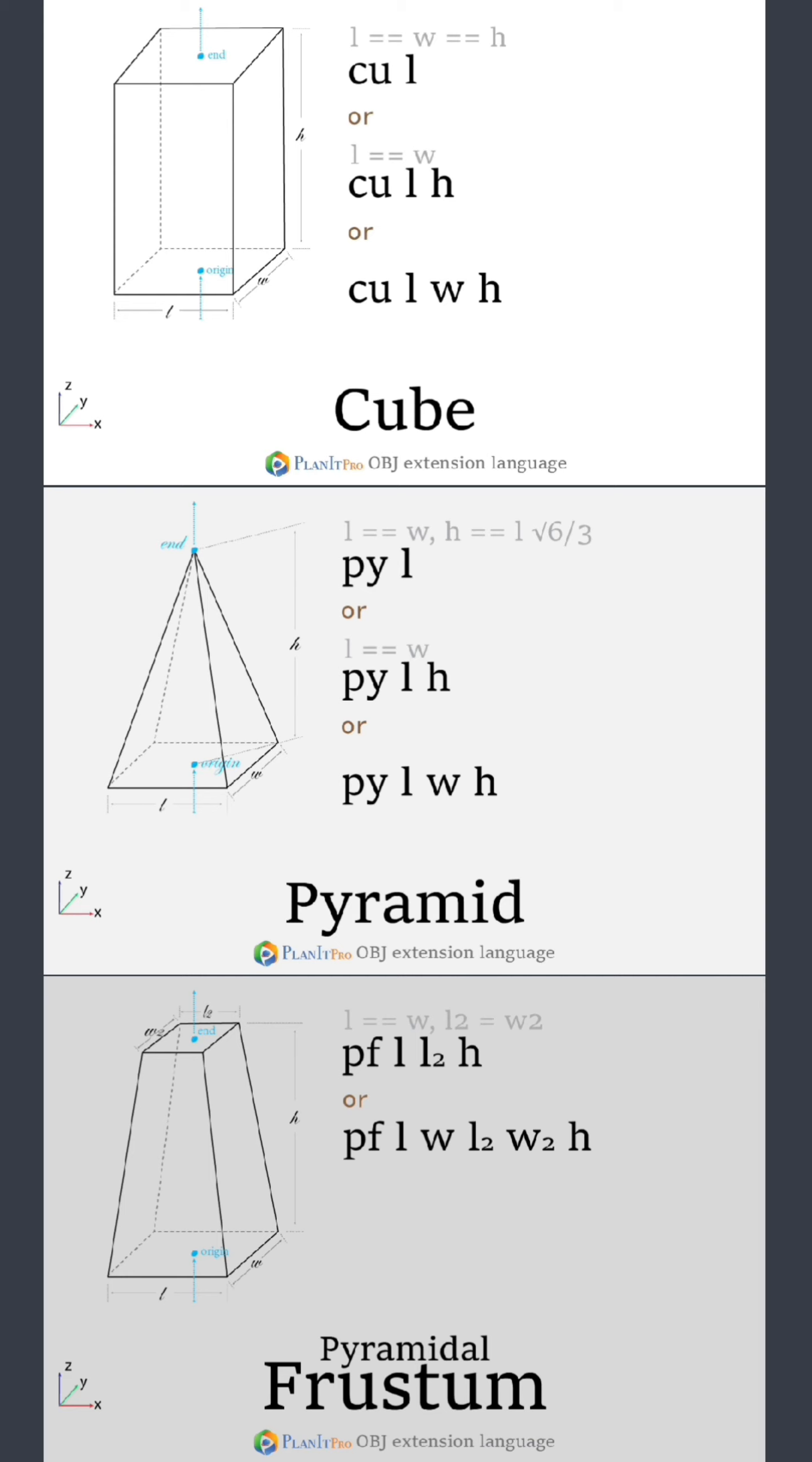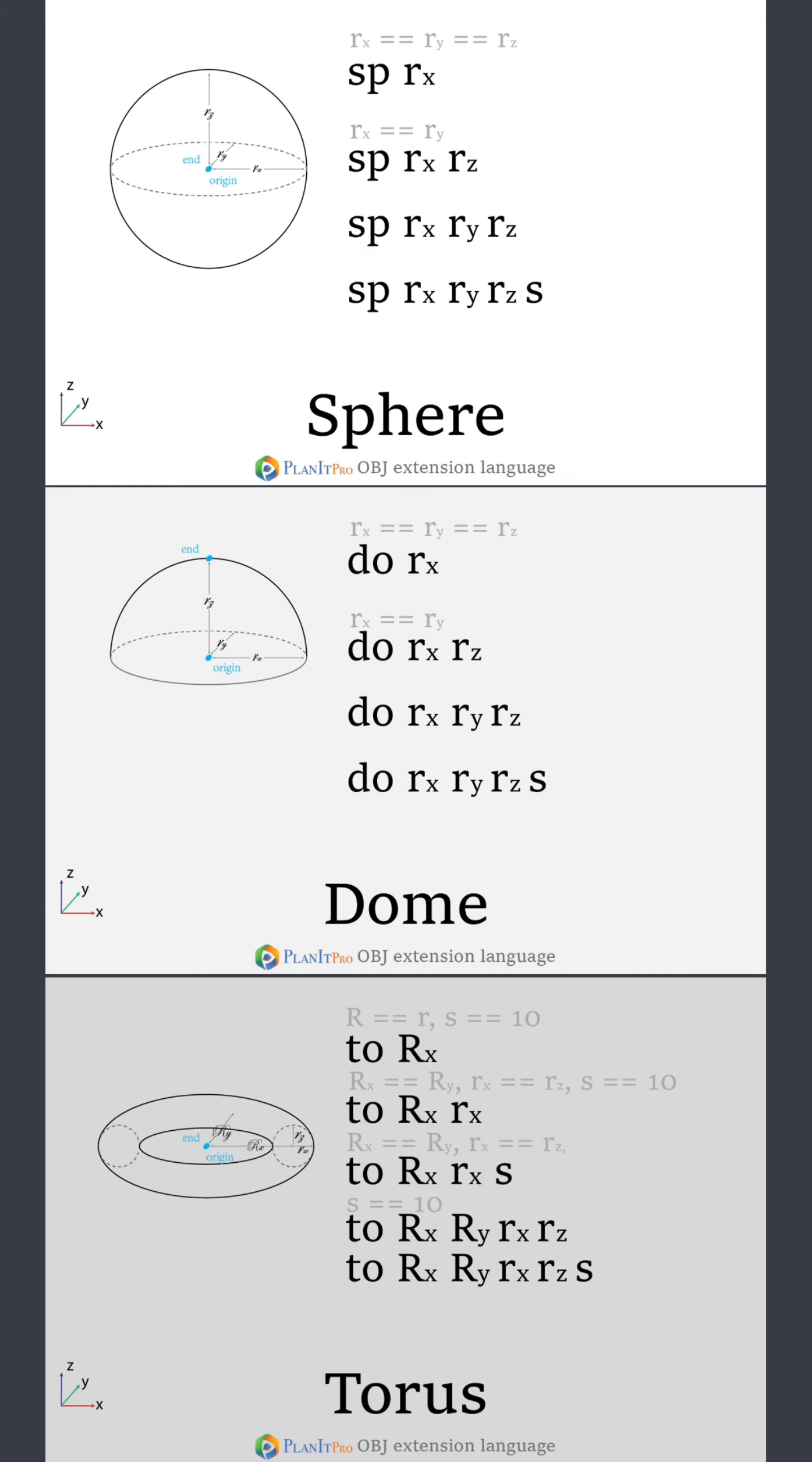The origin of pretty much all the geometries is at their bottom center, and their ends are at their top center. There are only two exceptions, which are the sphere and the torus, which have both their origin and ends at their geometric centers.